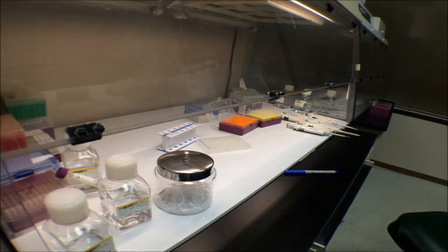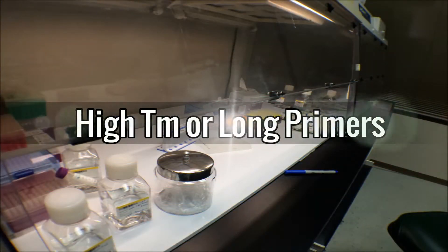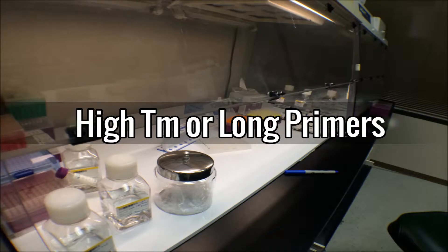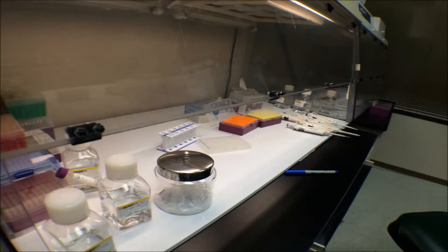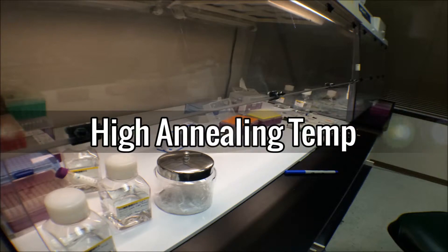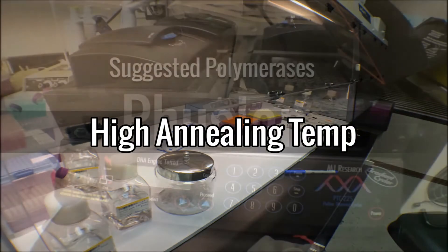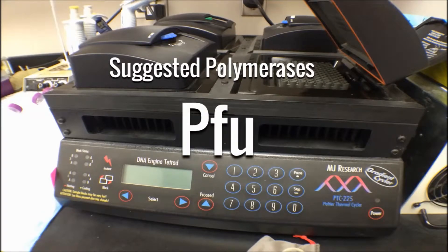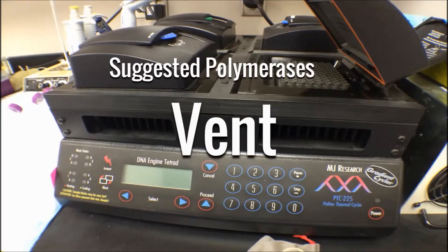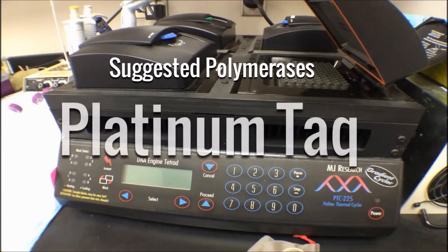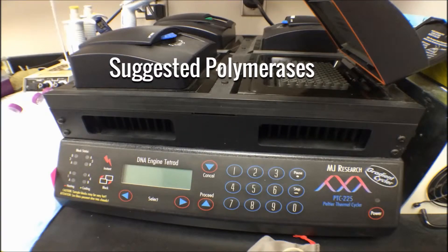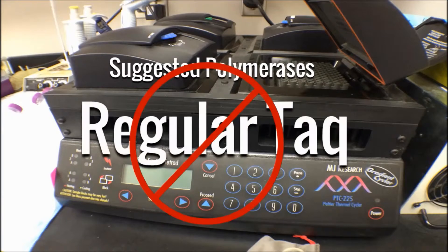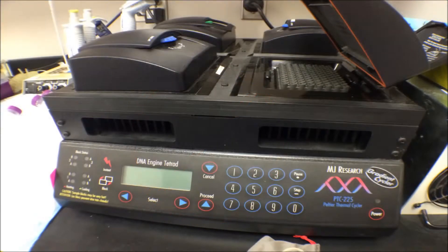We suggest using high Tm or long primers so that high annealing temperatures can be used. In general, a high annealing temperature leads to high priming specificity. For PCR amplification, we recommend hot start enzymes. Fusion, Q5, Pfu, Vent, and Platinum Taq have been known to work. Regular Taq is not recommended. The specific polymerase used may be dependent on your specific application.